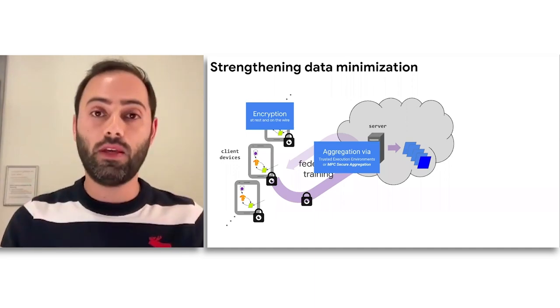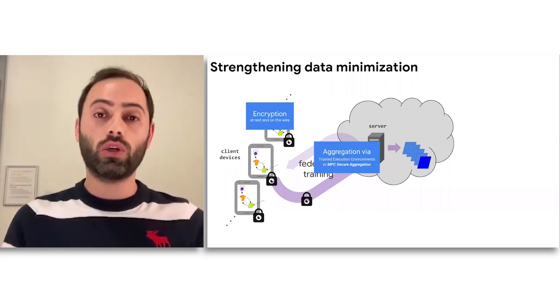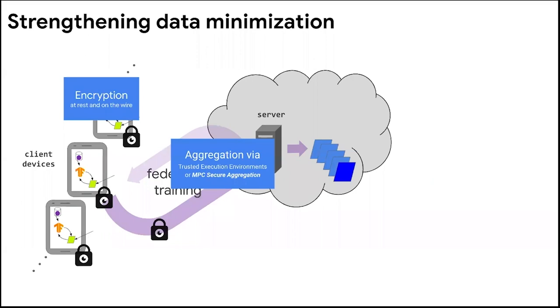We could strengthen data minimization using cryptographic and secure hardware technologies. Encryption at rest or on the wire ensures that if anybody is spying on the communication link between the server and client devices, they will not be able to inspect the messages or see the contents — the model parameters being sent from cloud to devices and back. Further, if we use multi-party computation and cryptographic primitives, we could ensure that the server only sees updates in aggregate as opposed to individual messages coming from single devices.